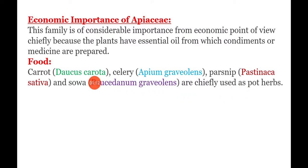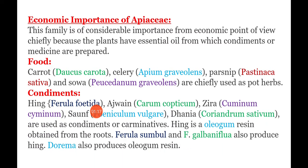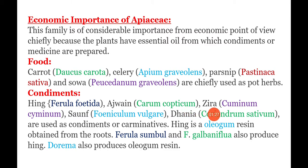The next category is condiments. Hing is known as Ferula asafoetida. Next, carom — Carum capticum. Next, Zera — Cuminum cyminum; saunf — Foeniculum vulgare; and dhania — Coriandrum sativum — are used as condiments or carminatives.